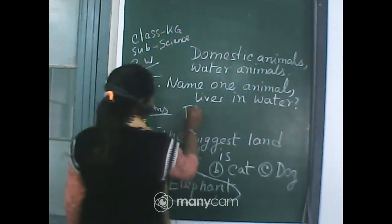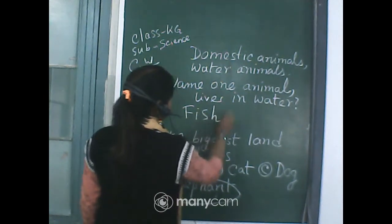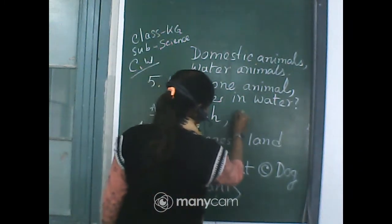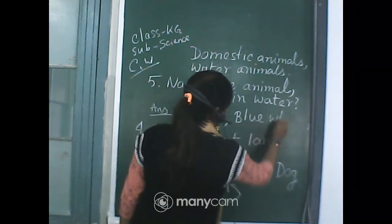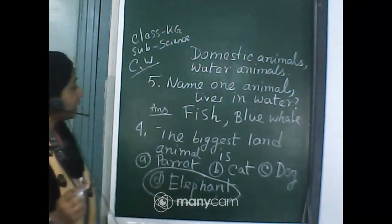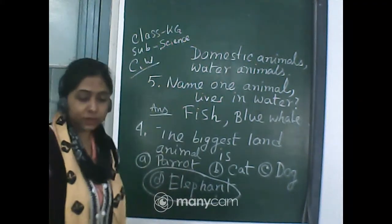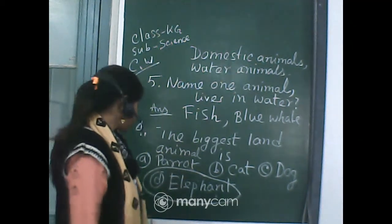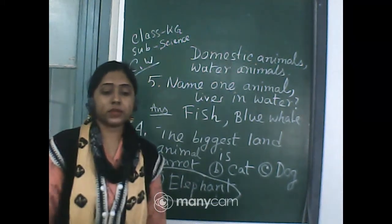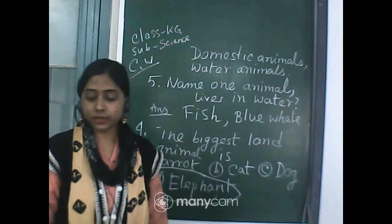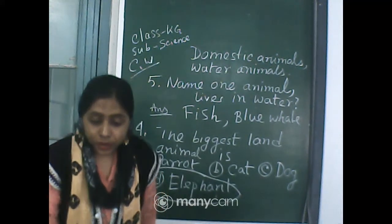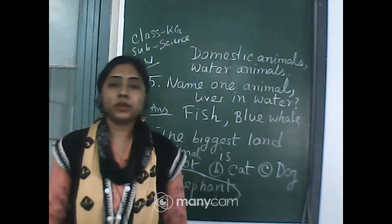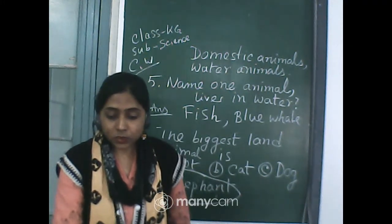So the best answer is fish or blue whale. Today we have completed five questions from Chapter 13 on domestic animals and water animals. Keep practicing at home. Next time we will meet again in another video.